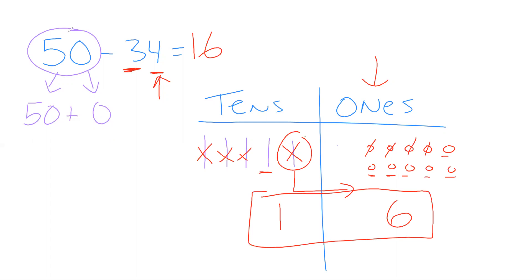All right, that's making some sense. Sometimes we can just take numbers away and it will work. Other times we won't have enough to take away, so we have to decompose — which means breaking apart a 10 into 10 ones. As we get into bigger numbers, we might have to decompose and break apart 100 into 10 tens. So we're going to keep that in mind. Let's do one more.